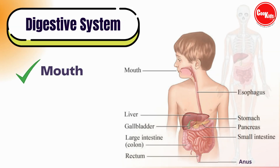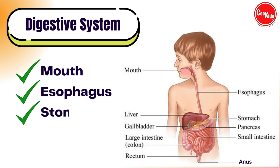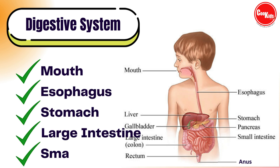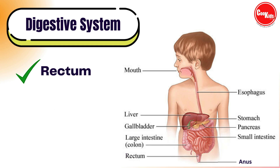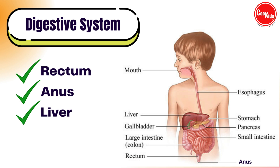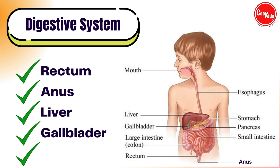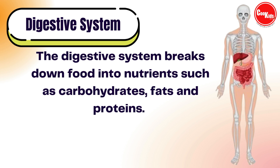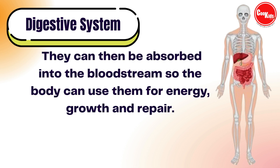The alimentary tract of the digestive system is composed of the mouth, esophagus, stomach, large intestine, small intestine, rectum, and anus. Associated accessory organs include the liver, gallbladder, and pancreas. It breaks down food into nutrients such as carbohydrates, fats, and proteins, which are then absorbed into the bloodstream so the body can use them for energy, growth, and repair.